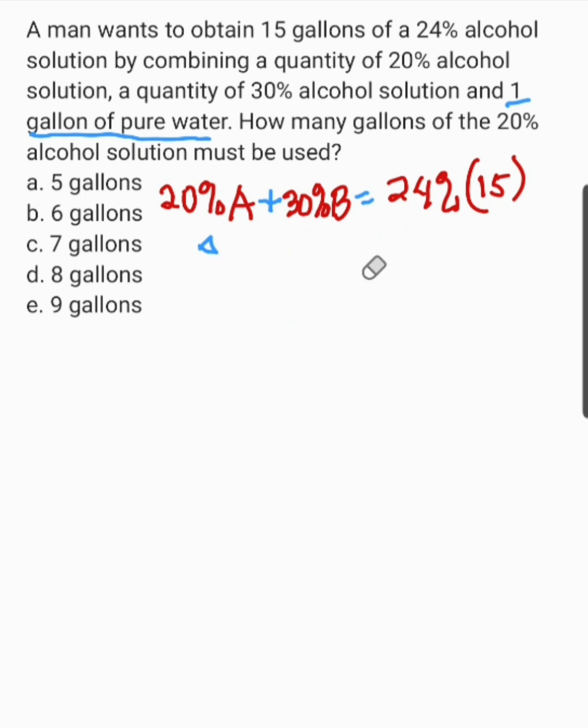Next, doon naman tayo sa yung mismong quantity or yung number of gallons. Yung A, kasi hindi natin alam kung ilan yan siya, plus yung B. Ina-add natin yan, yan yung mga number of gallons. A plus B plus 1. Kasi yung 1 na nandito sa given, yan yung pure water. And this is equal to 15. Ito yung total mixture.